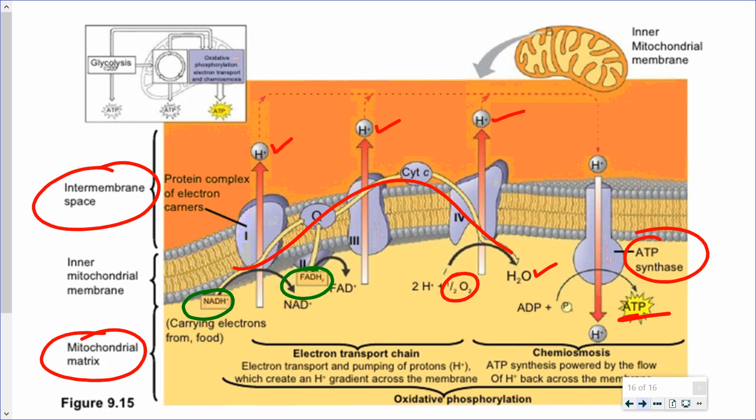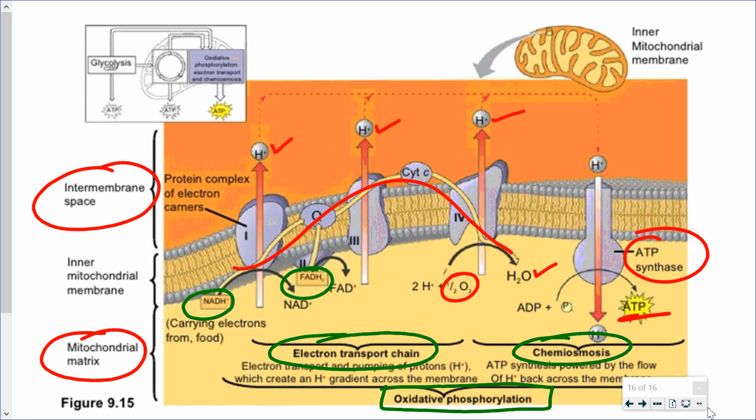So in terms of oxidative phosphorylation, this entire process is oxidative phosphorylation. It is made up of the electron transport chain and the actual production of ATP using the proton gradient is referred to as chemiosmosis. Numbers that we then have, if we go back to glycolysis,